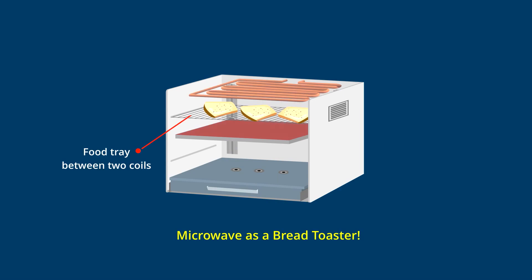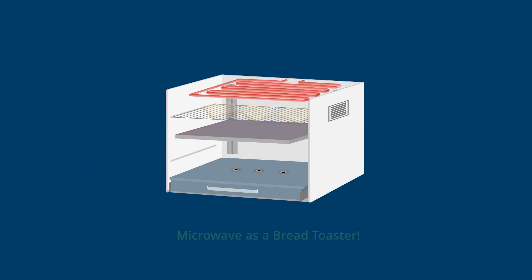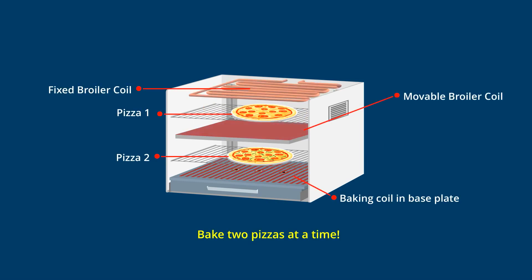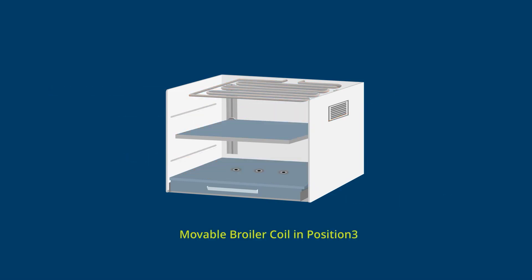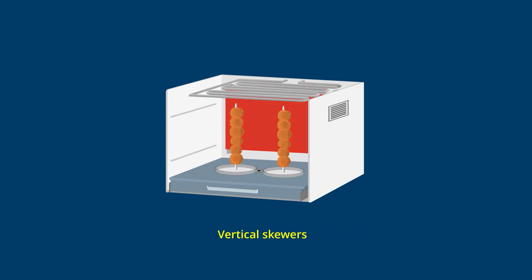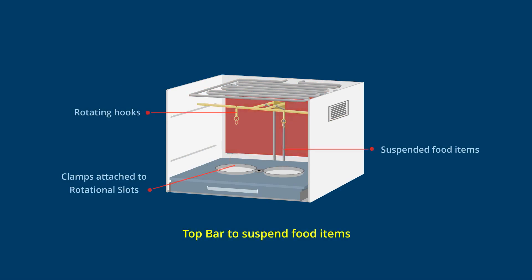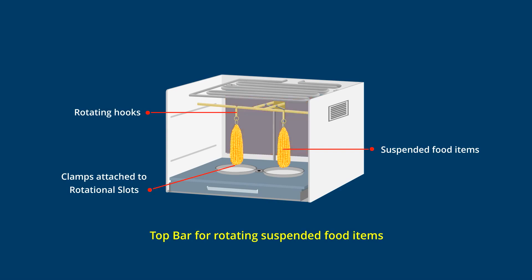Toasting bread is easy as a food tray can be inserted between the fixed and movable broiler coil. Roasting two pizzas at the same time is easy. And when the movable broiler coil is in position 3 against the back wall, roasting kebabs on vertical skewers inserted in rotational slots of the extendable base tray is simple. Position 3 also supports roasting food items suspended from the top bar.